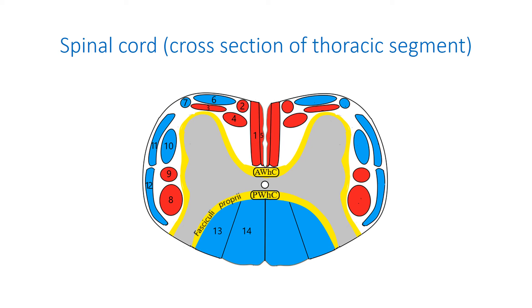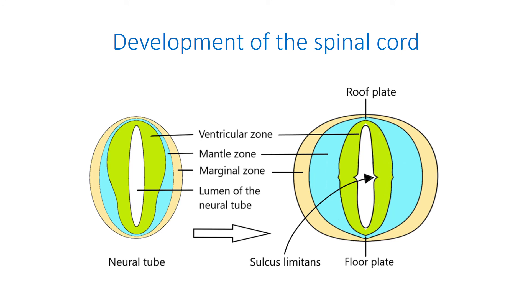As noted in the video about the embryogenesis of nerve tissue, the neural tube consists of three layers: ventricular zone, mantle zone, and marginal zone. Whilst the cranial part of the neural tube forms the brain, the caudal part develops into the spinal cord. The lateral walls of the neural tube thicken, while its dorsal and ventral walls remain thin and are called roof and floor plate respectively. The internal surface of the lateral walls is demarcated into dorsal and ventral parts by the inner longitudinal sulcus called sulcus limitans.